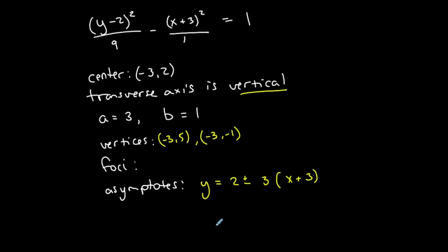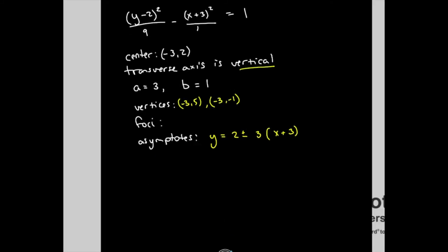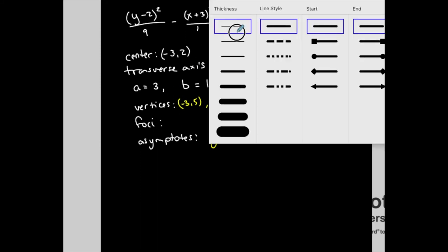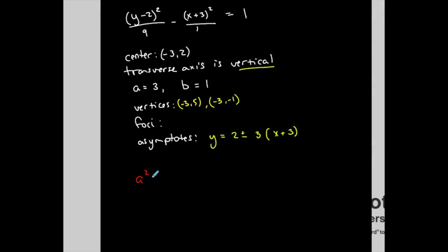Now the foci, let's talk about that. I need c to find those ordered pairs. So to find c, we have a relationship between a, b, and c. a² plus b² is c². For a hyperbola, it's plus. For an ellipse, it's minus. a² is 9 plus b² is 1 equals c². So c is the square root of 10.